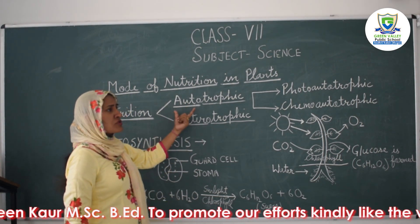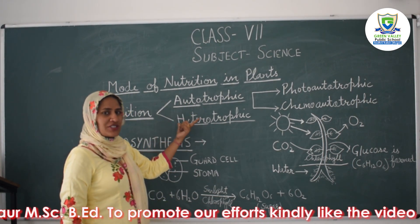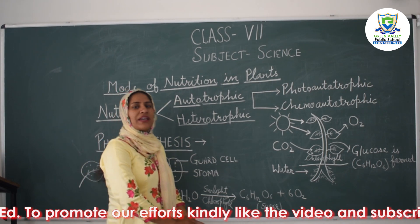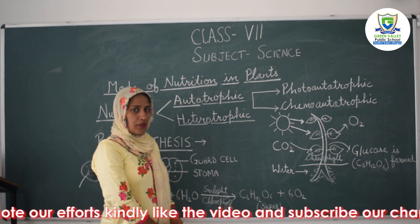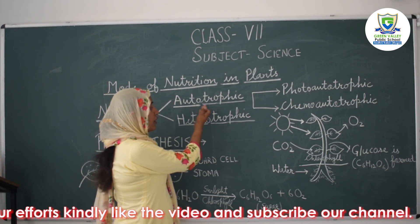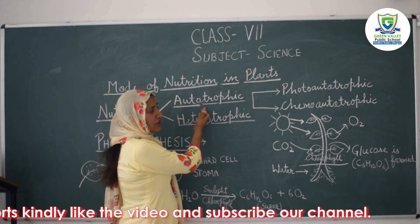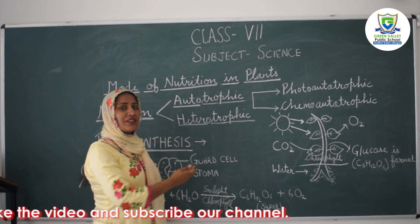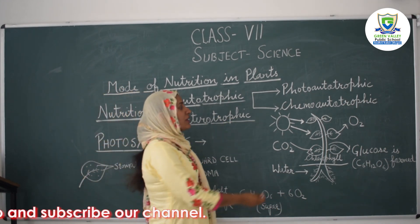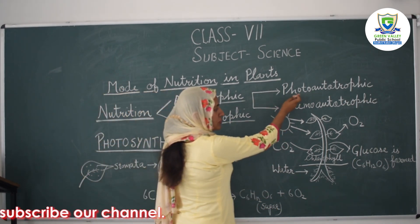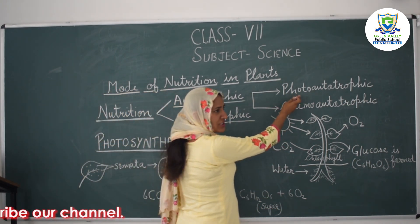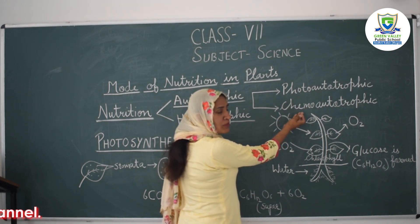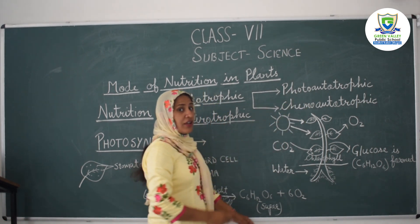Autotrophic nutrition is shown by green plants. Autotrophic nutrition is further of two types: photo autotrophic nutrition and chemo autotrophic nutrition.